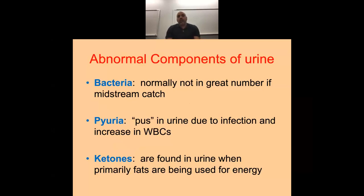Bacteria: we tell patients to do a clean catch — a midstream catch. They start to urinate, stop, restart, then catch the sample. The reason is bacteria starts to climb up the urethra, so we flush it out first. If you see a little E. coli and the patient has no complaints, we don't treat it — it's probably contamination. If they have complaints, that's different. Pyuria — pus in the urine — typically means infection. Ketones you won't see unless someone is exercising heavily, on a keto diet, is diabetic, or is truly starving for three or more days.